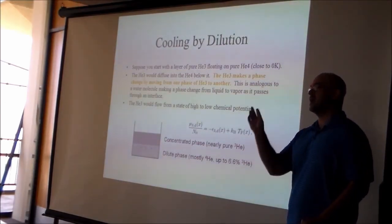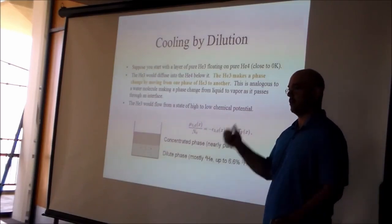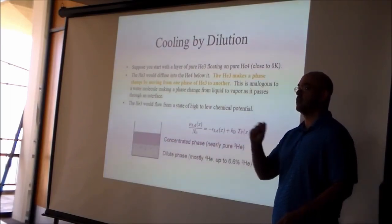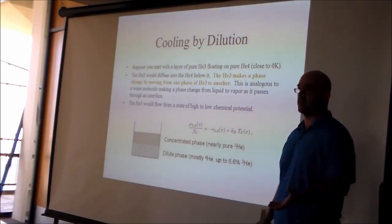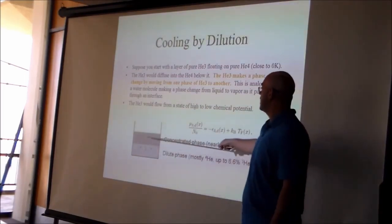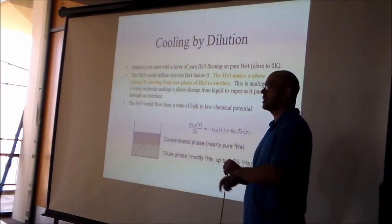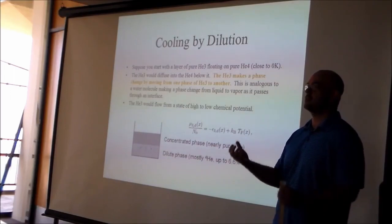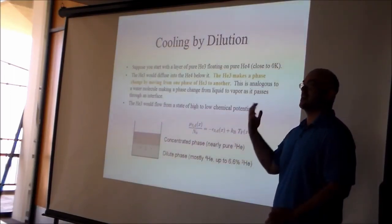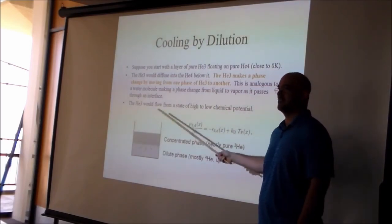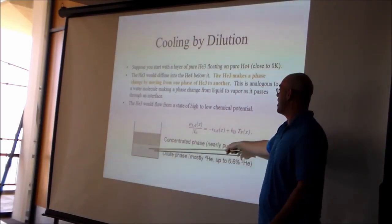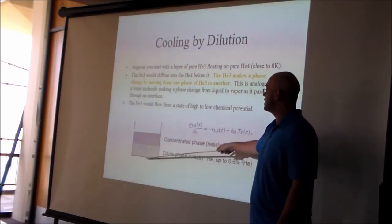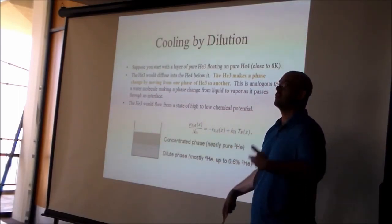Why does helium-3 diffuse into the helium-4? Helium-3 has a bigger zero-point energy — it is less massive, and zero-point energy goes as 1/m — so it occupies a larger volume. When a helium-3 atom moves into the helium-4 environment, it gets closer to its neighbors and experiences a stronger binding force than in the pure helium-3 environment. However, helium-3 is a fermion, with a Fermi temperature of about 1 Kelvin.